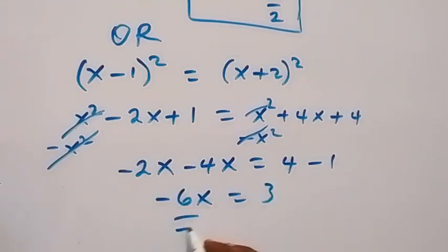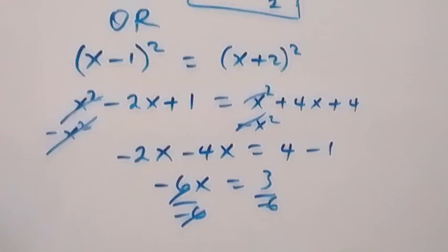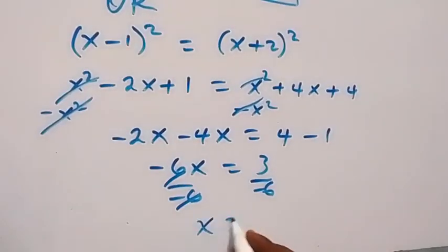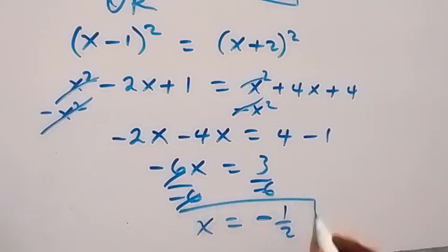Now the value of minus 6 here - these cancel each other, and we now have x equals 3 over minus 6, which is also 1 over minus 2, which is minus 1 over 2. So whichever way, out of these two ways, gives us minus half as a solution to this problem.